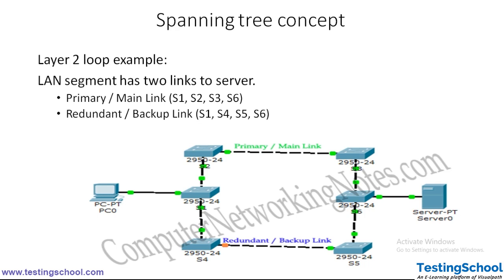If you look here, we have a layer two loop example — same diagram as used in slide one, showing primary and main link in green. From PC0 to server0, if this primary or main link is up, it is always preferred first and always used. Because of some problem, when the primary link goes down, this redundant link will still provide reachability between PC0 and server0.